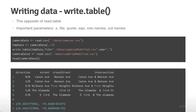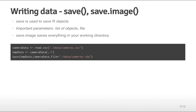Another way to save data is using the save and save.image commands. Unlike write.table, which writes a CSV or tab-delimited file with one data frame, save can save multiple R objects at once into one binary file. When you load it back in, you'll see all the objects you saved. save.image works similarly but saves everything in your workspace — all variables you've created while working in R.